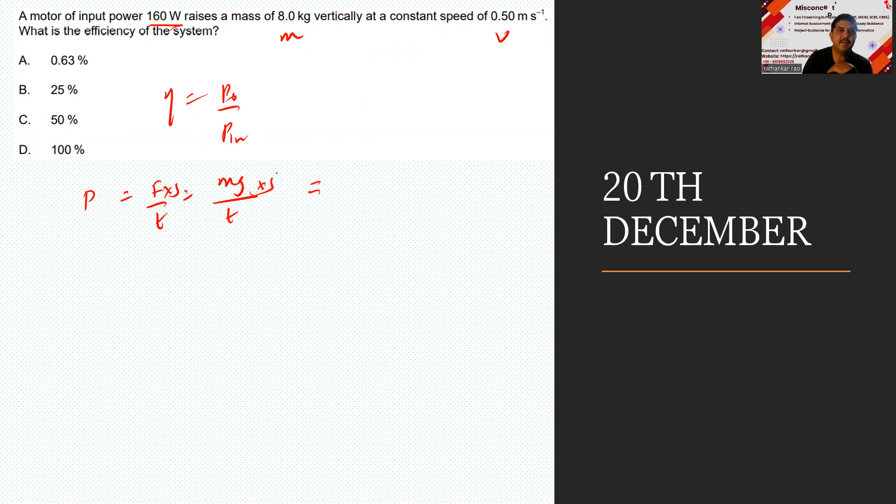What is m here? 8 kg. 8 into 10 into displacement. Do we know displacement? No, so let us write s by t, which should be 8 into 10 into v, which should be 8 into 10 into 0.5.